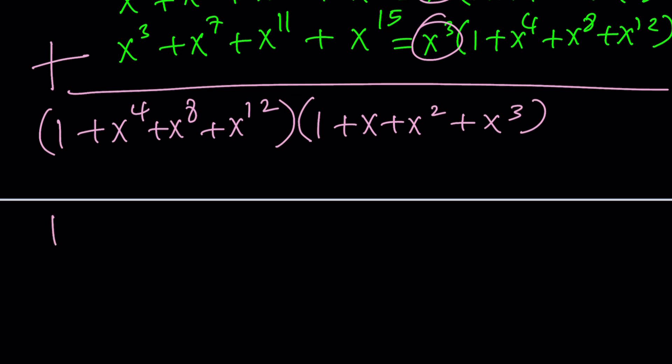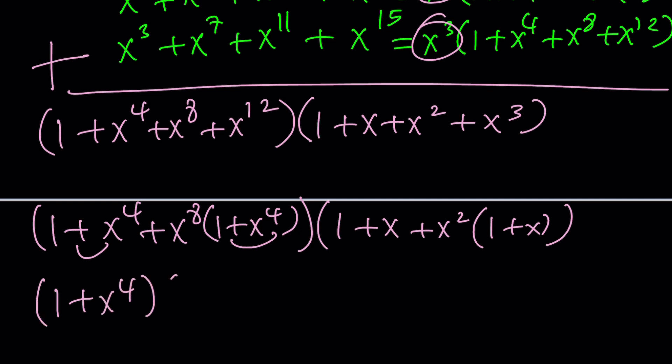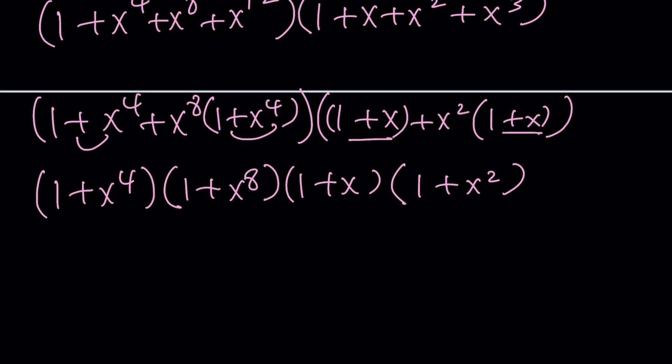Within each group, I want to factor by grouping again, because it's possible. This is 1 plus x to the 4th, and here we have x to the 8th as a common factor. If you take out x to the 8th, you get 1 plus x to the 4th. And here, we have 1 plus x, and then take out x squared, you'll get 1 plus x again. So 1 plus x to the 4th will be multiplied by 1 plus x to the 8th. And 1 plus x times 1 plus x squared will be the other factor.